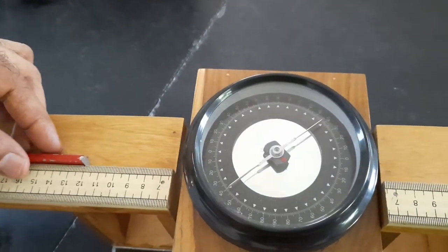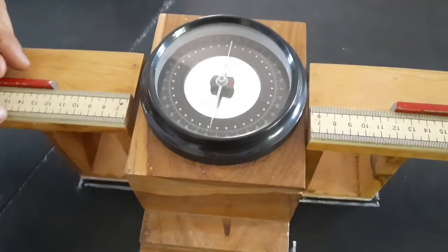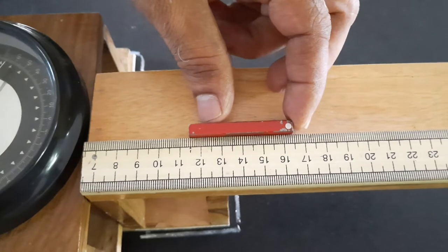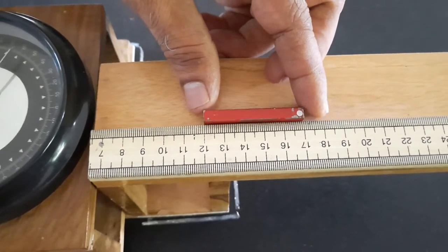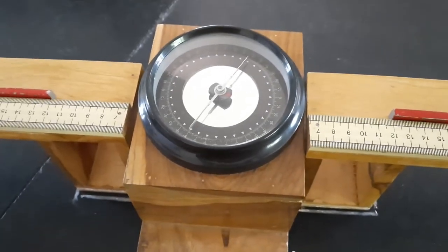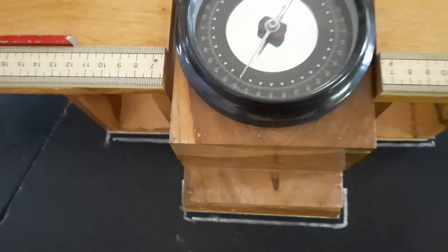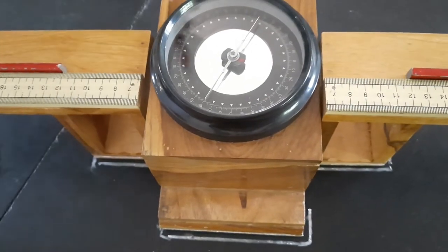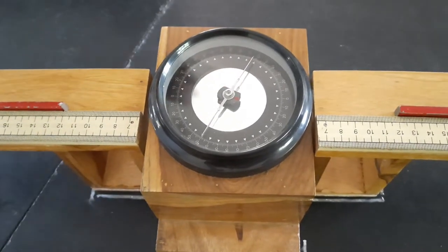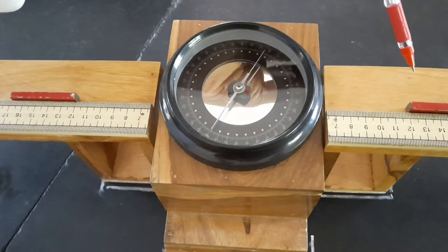The two magnets should be at the same distance from the compass box. For example, if the left arm has the north pole facing the compass box, the right arm should have the south pole facing the compass box. Opposite poles of the magnets should face the compass box at equal distances.